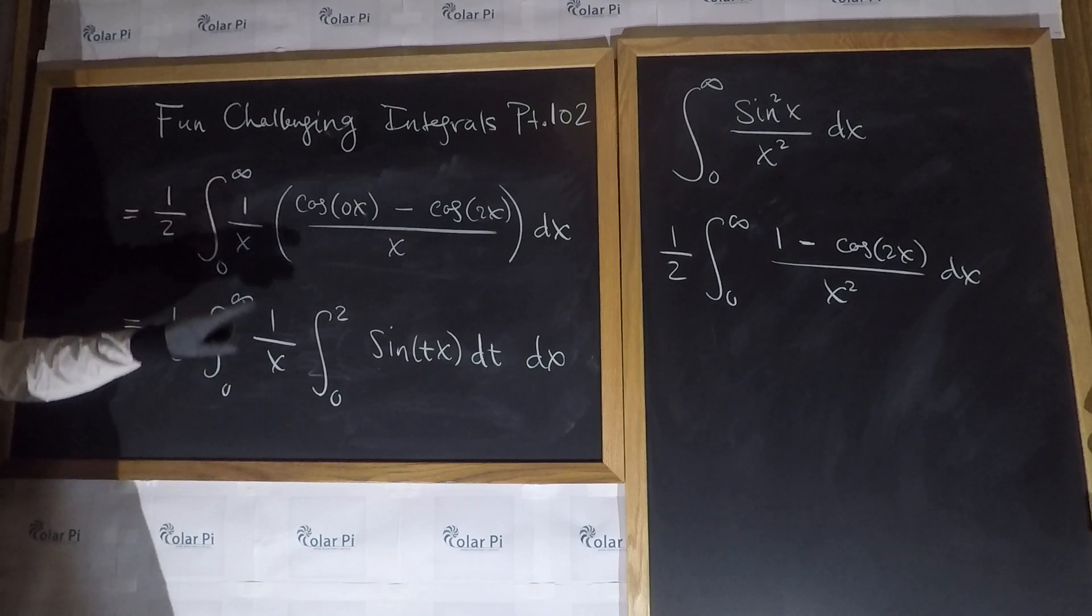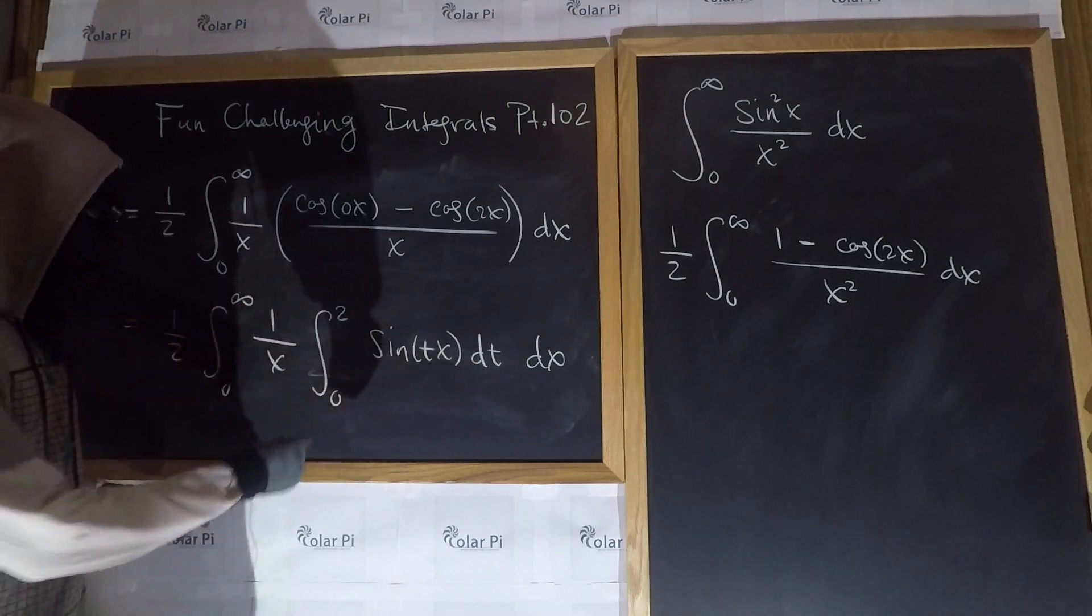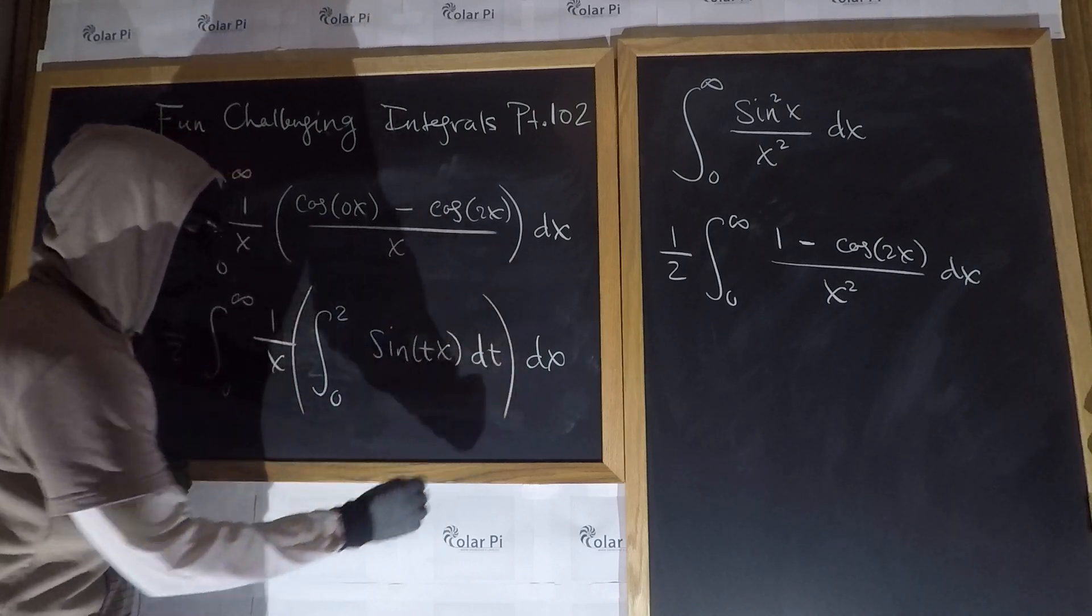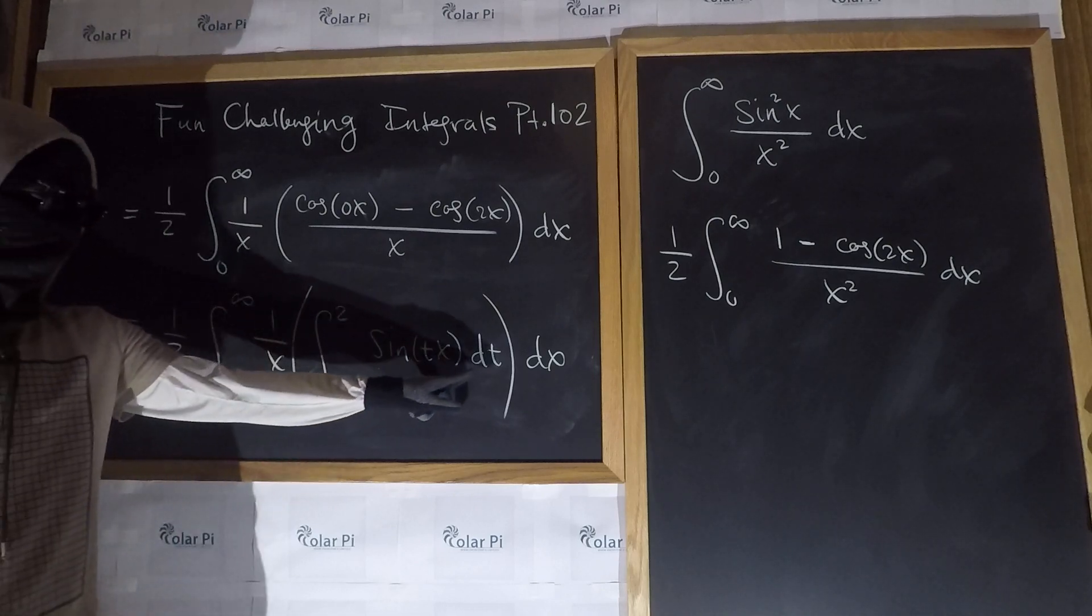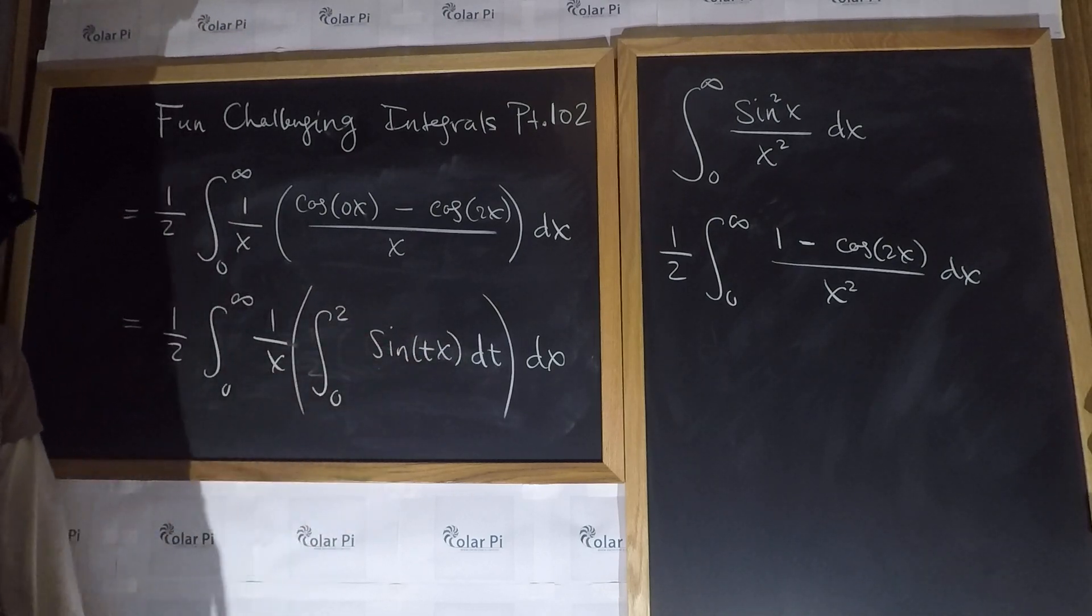1 over x is 1 over x. And, then, this integral, this here, right? is integrating with respect to t. It's integrating with respect to t. So, x is treated as a constant.